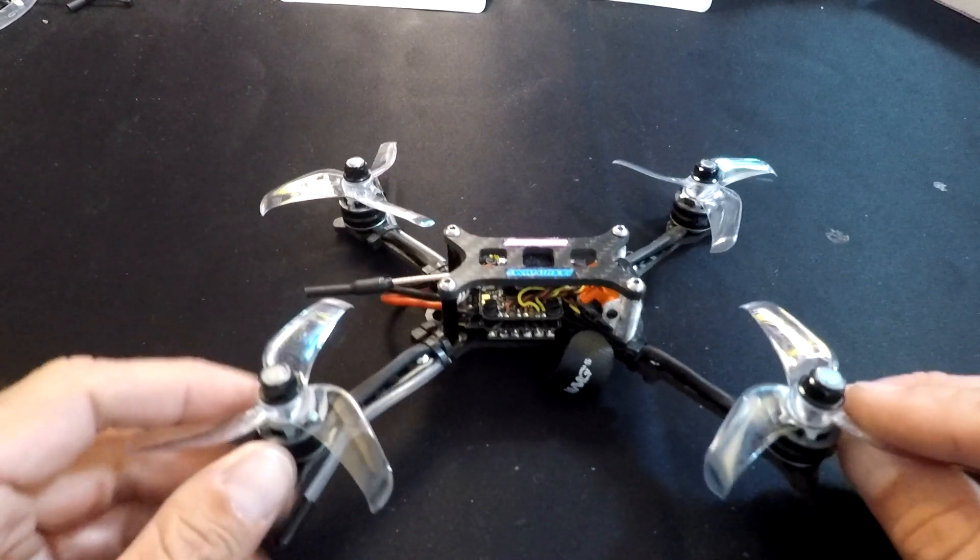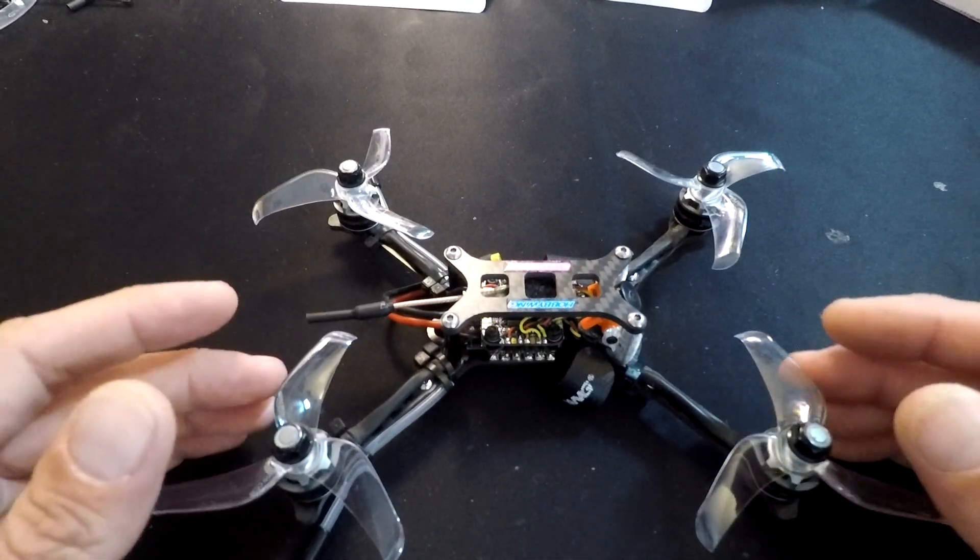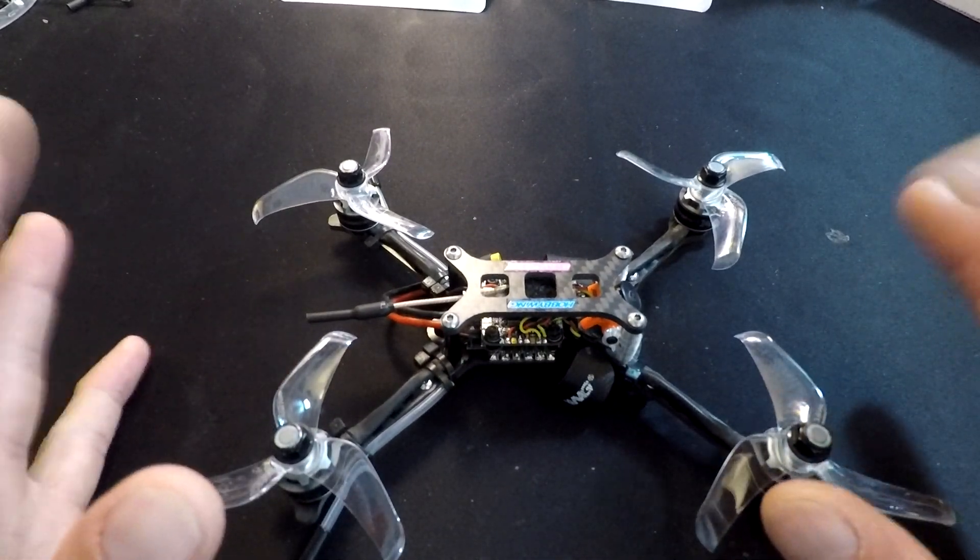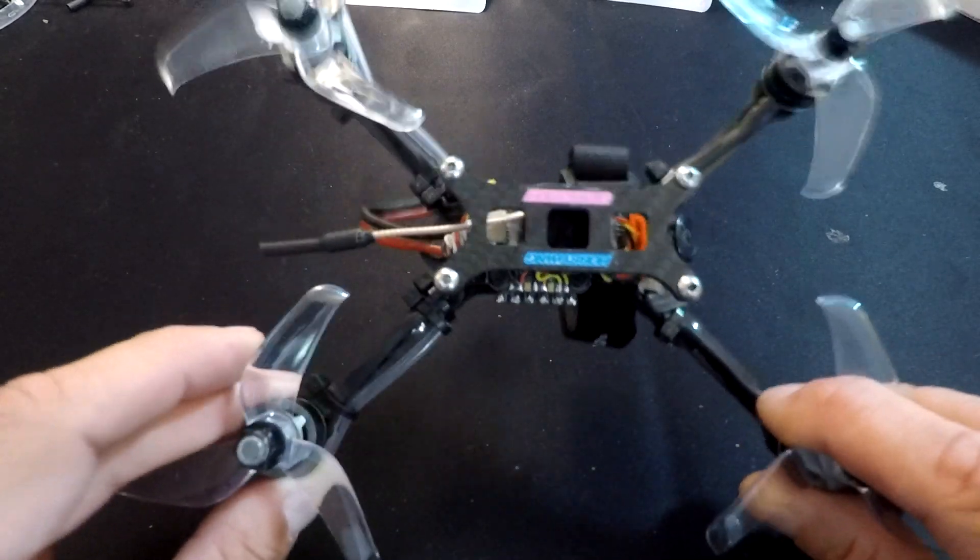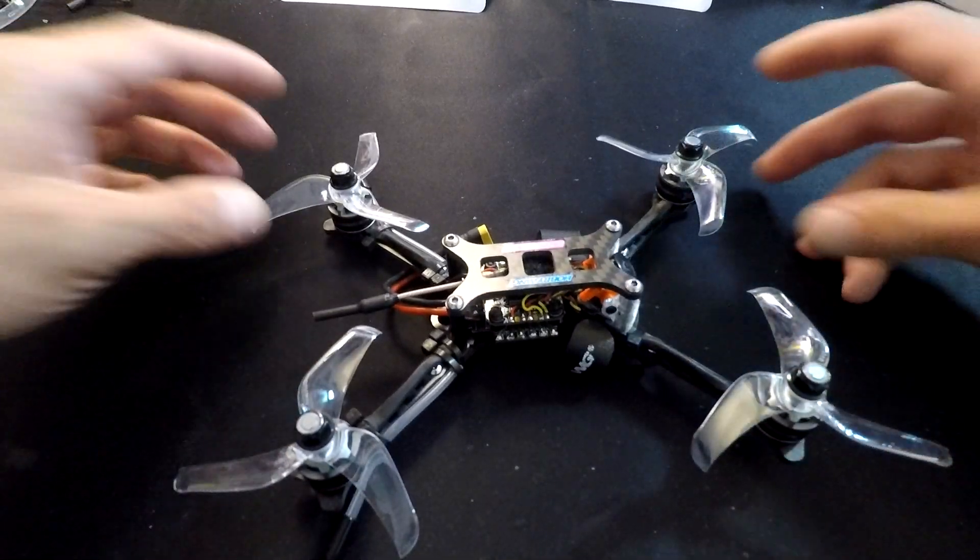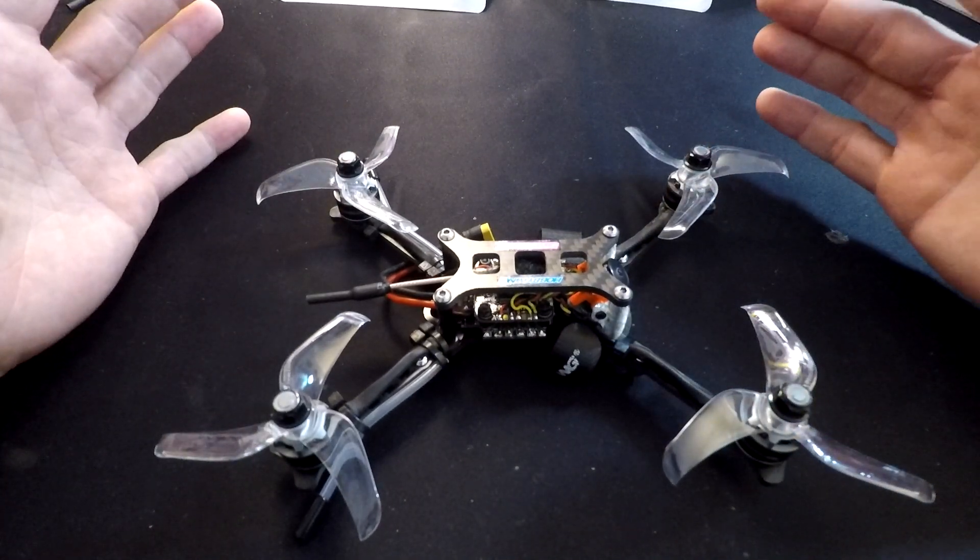A 700 milliamp 4S probably gives easily four or five, maybe even more minutes of runtime depending on how you're gonna go. And like I said, still comes in under 250 grams all up, so great little copter, flies awesome.